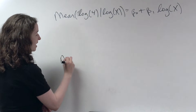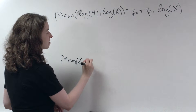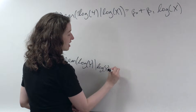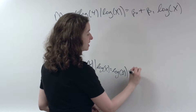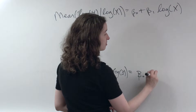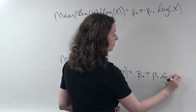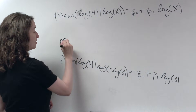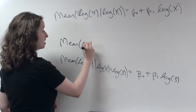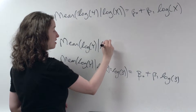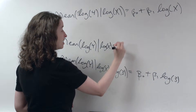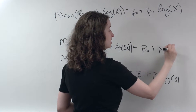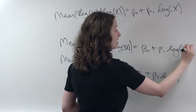First let's write this down. We have the mean of the log of y, given that the log of x is equal to the log of 3 — that equals beta0 plus beta1 times the log of 3. And above that, we'll write down the same thing but where we've multiplied 3 by some number k. The mean of the log of y, given that the log of x is equal to the log of 3k — in other words, x equals 3k — is equal to beta0 plus beta1 times the log of 3k.